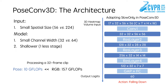PoseConv3D uses an arbitrary 3D CNN to process the heatmap volumes and is much lighter than 3D CNNs for RGB. We illustrate PoseConv3D instantiated with SlowOnly. In 3D CNN adaptation, we find two good practices: first, the input should have a small spatial size and a large temporal length; second, a thinner and shallower network is sufficient for skeleton processing.